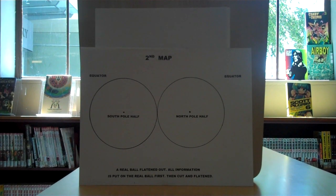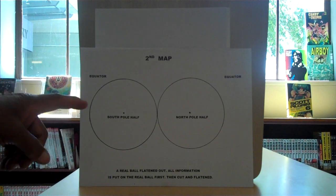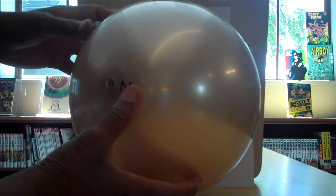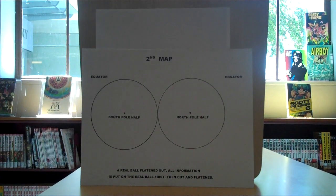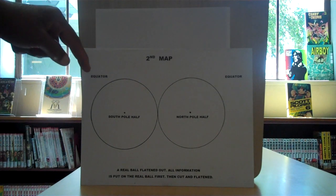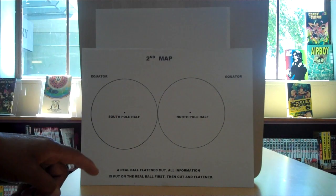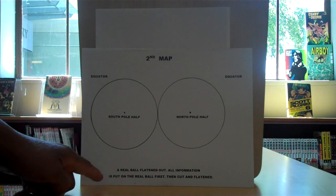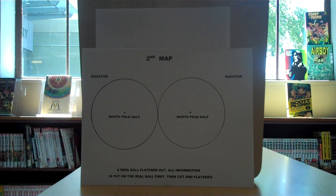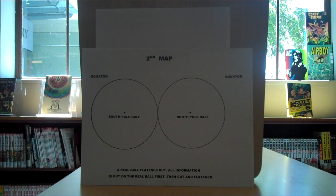This here is the second way, being shown to you here. What you do is you take the ball and cut it from north to south into two halves — south pole half, north pole half. This is the second map. Right here is the equator. And it is a real ball, flattened out. All the information is put on the real ball first, then cut and flattened, just as this. All the information would be on it. It is the two ultimate, least distortion maps possible of a physical, spherical object.